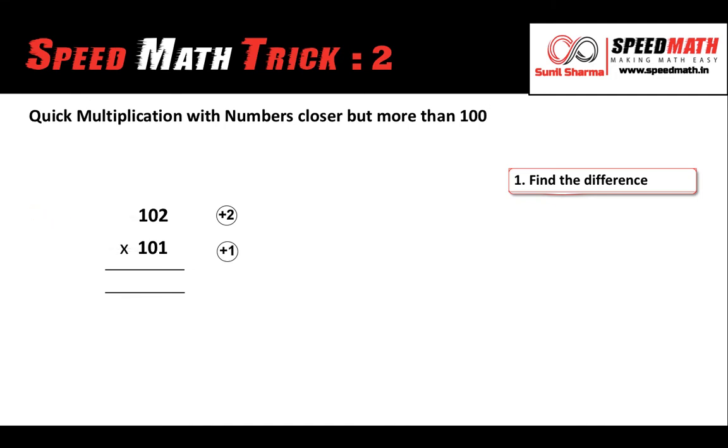Second step, we need to multiply the numbers in the circle. So let's multiply 2, 1 × 2. Now here there is a condition that whenever you multiply the numbers in the circle and you happen to get a single digit, always put a 0 before that. Remember that.